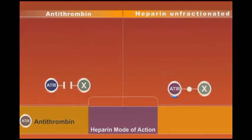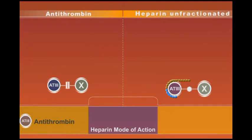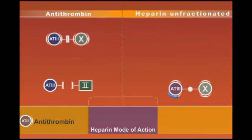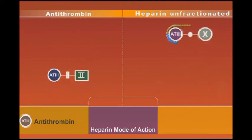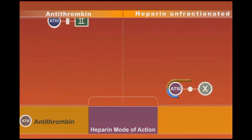Low molecular weight heparins, or fractionated heparin, have a molecular weight of 2,000 to 6,000. Just like heparin, they bind to and activate antithrombin 3. Unlike heparin, they are more selective and inhibit only factor 10.